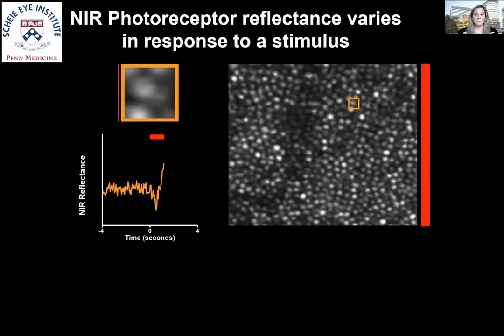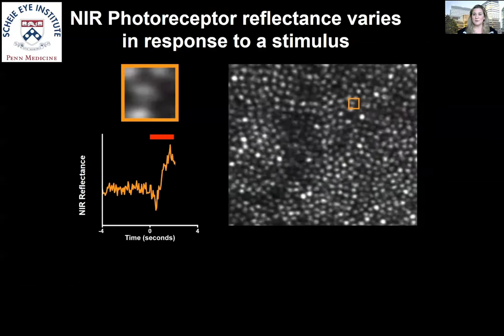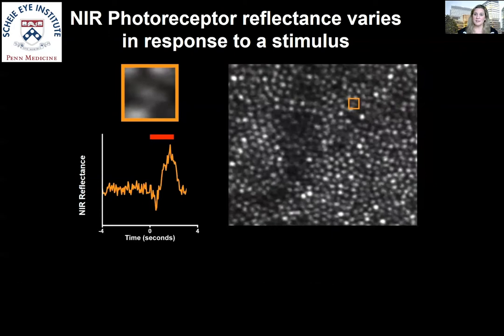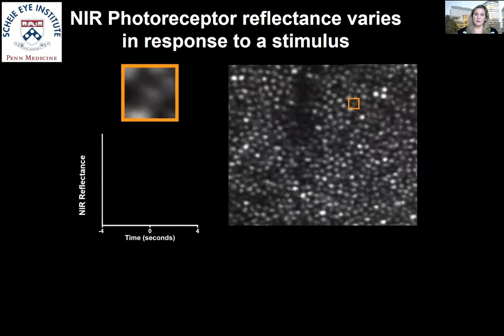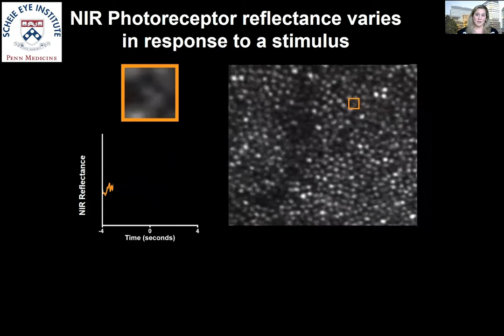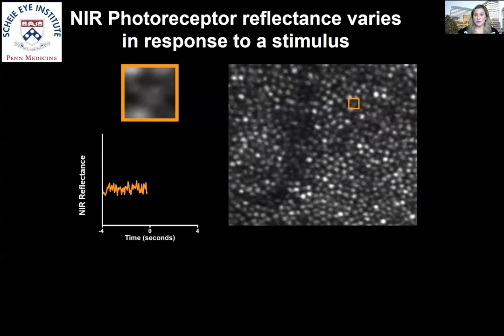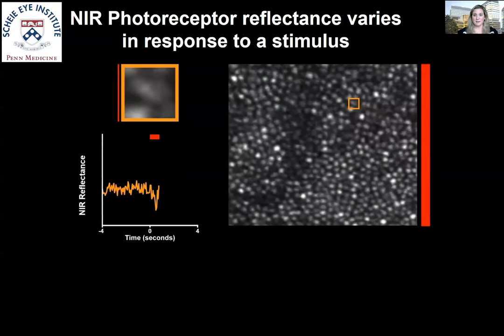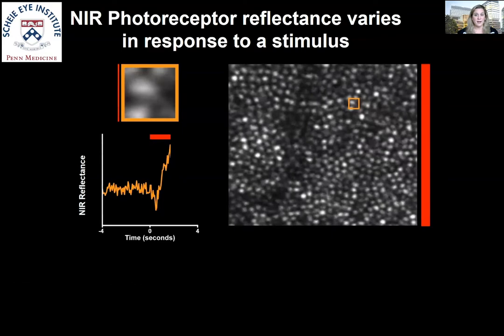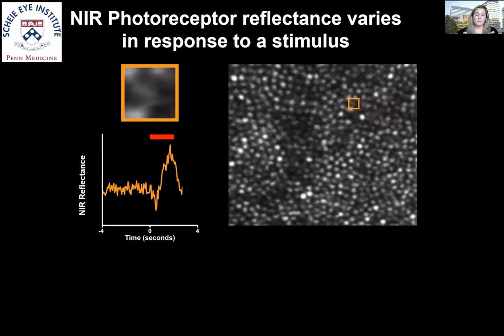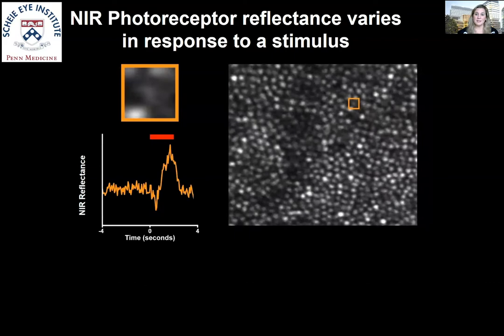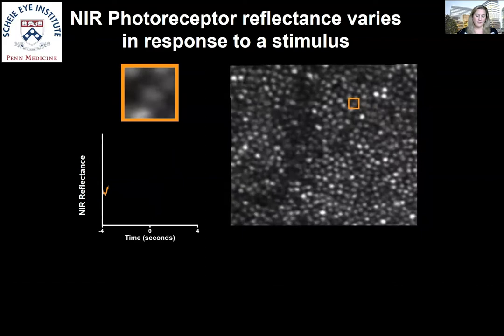My team and others made the observation that near-infrared photoreceptor reflectance varies in response to a stimulus. We image reflectance with near-infrared light using adaptive optics scanning laser ophthalmoscopy, and stimulate the photoreceptors across the full imaging field using a visible light stimulus. Looking at each photoreceptor's reflectance before, during, and following the stimulus, we observe how reflectance changes in response to that light. For example, one cone's reflectance increases and then decreases in response to the visible stimulus.